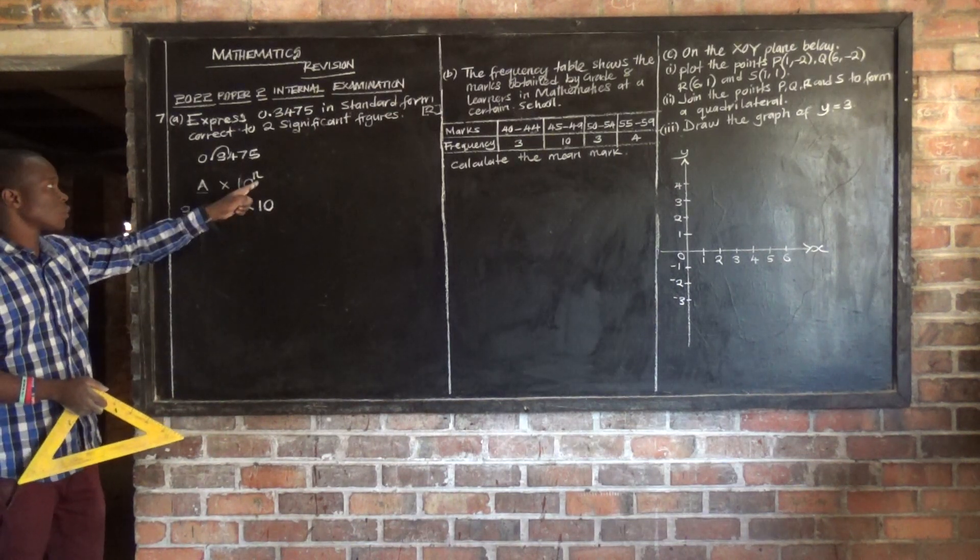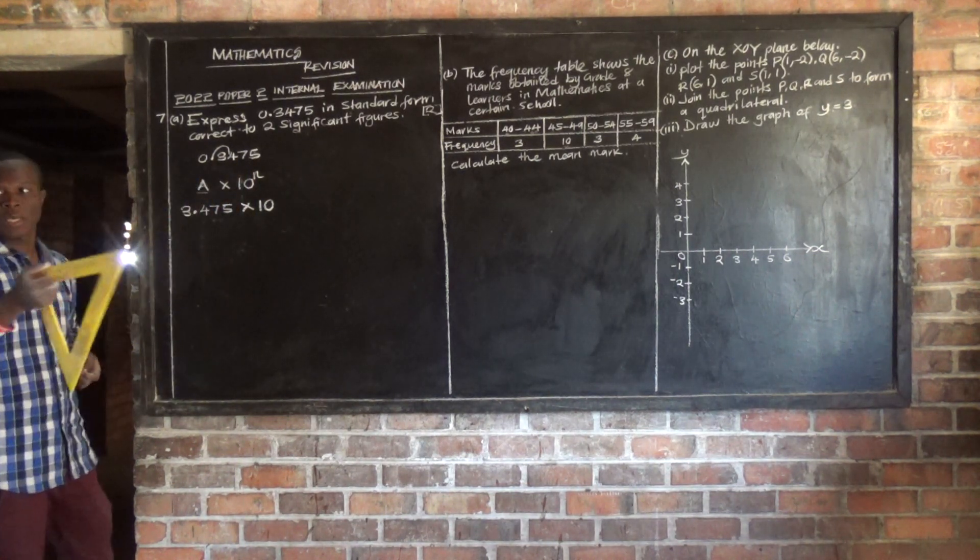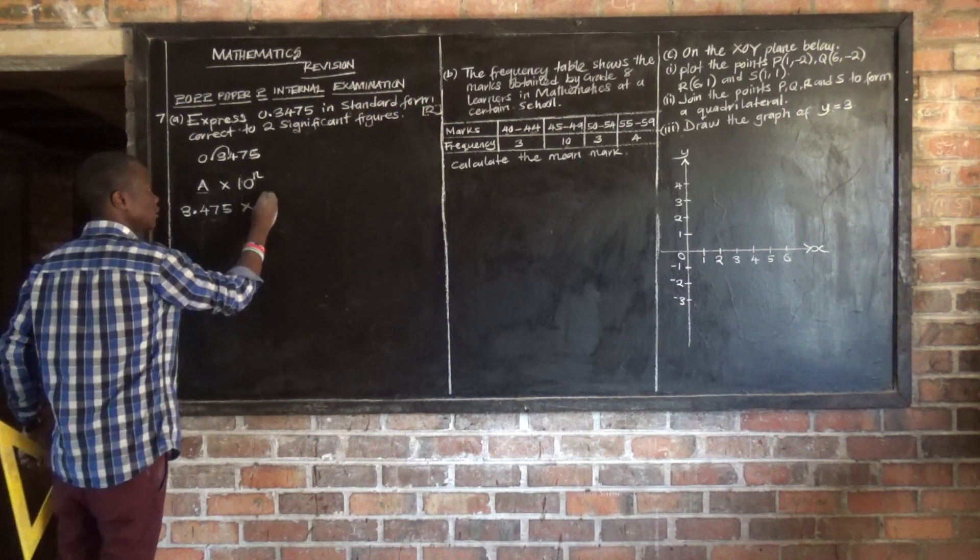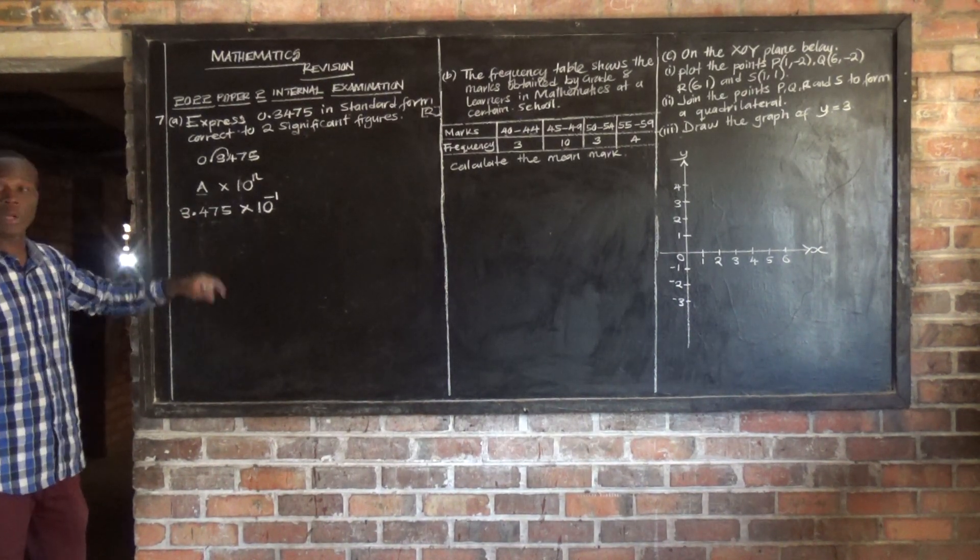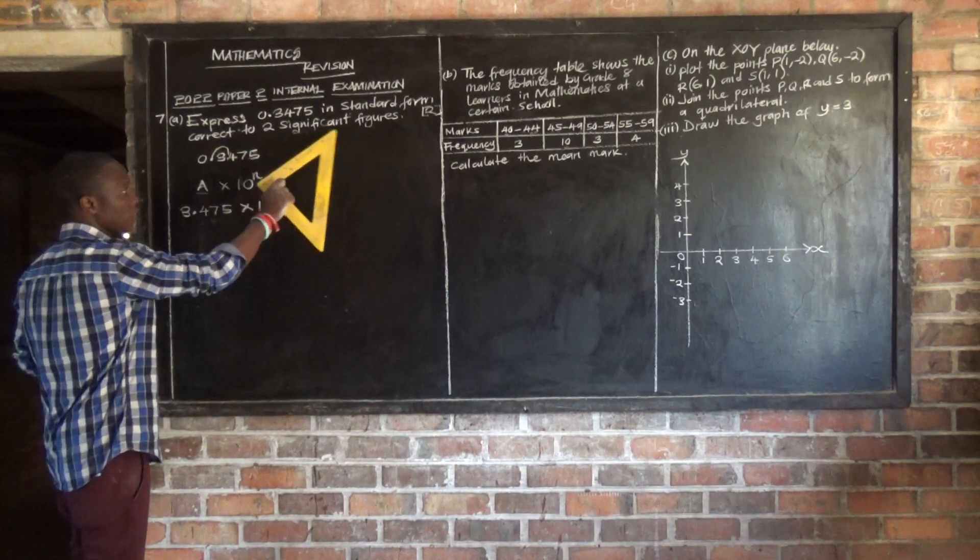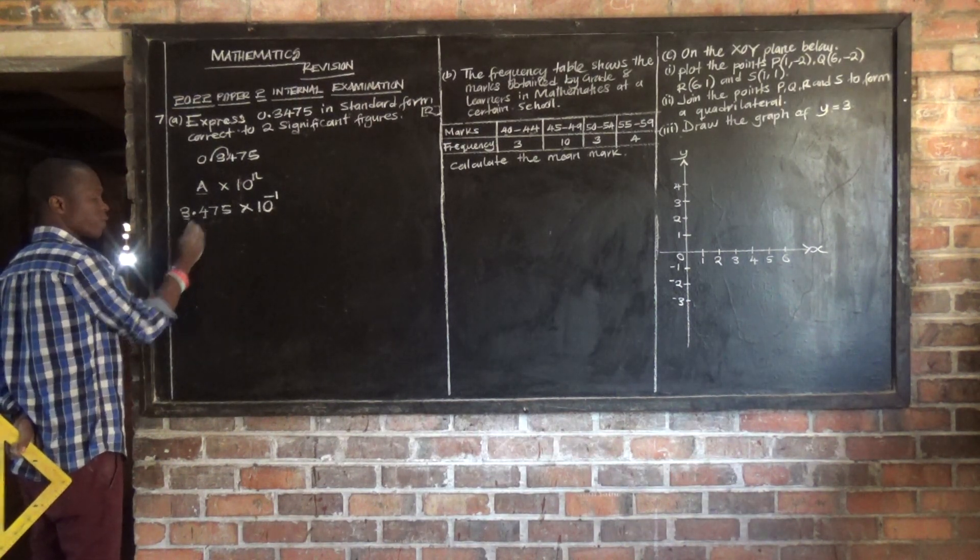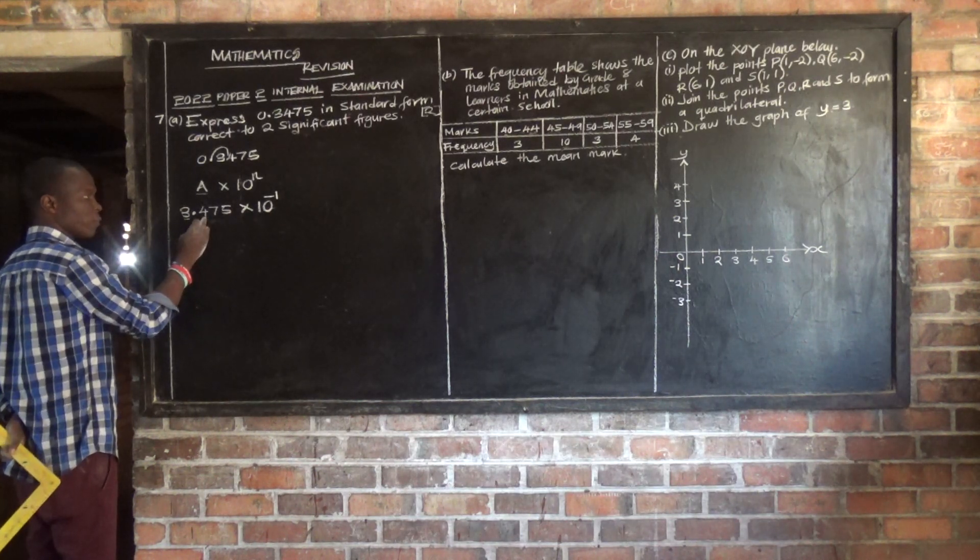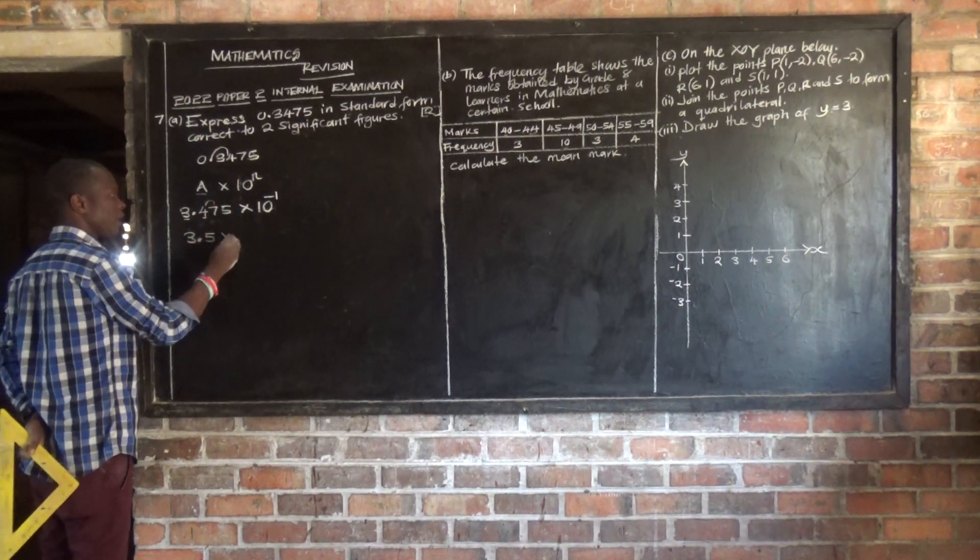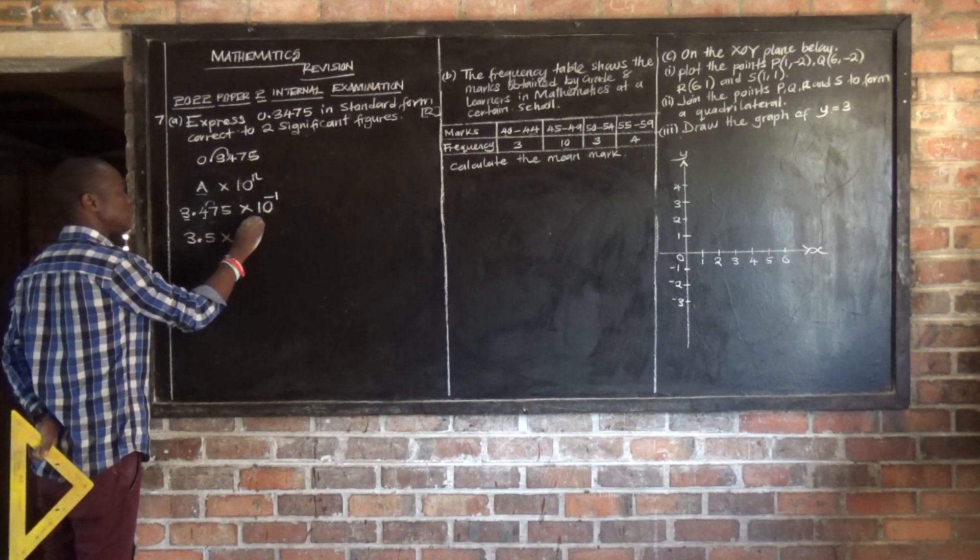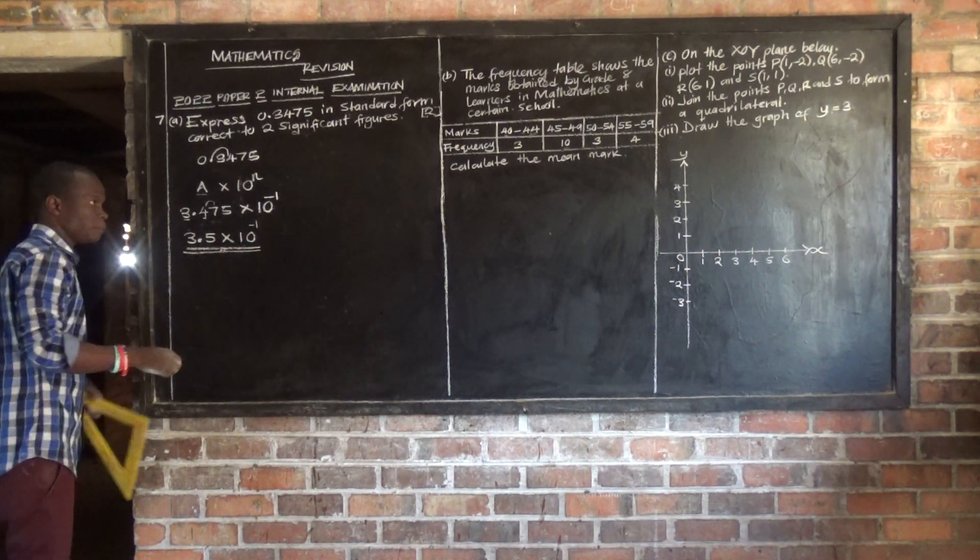Now n, that is the integer. So how many decimal places have been moved? Only 1. But looking at the nature of the number, if this number is less than 1, hence the integer is going to be negative. But the condition is, we need to write this number correct to two significant figures. So just consider 2 numbers are important, 3 and 4. You can get 1 from this 5 and add this to 4, so it becomes 3.5 multiplied by 10 raised to power negative 1. So this is our answer.